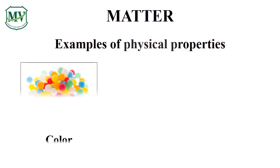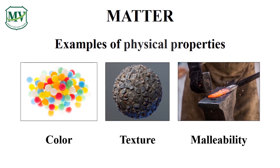Color, texture, and malleability are examples of physical properties of matter. For example, iron is malleable — it means that iron can be hammered into a thin sheet or wire. The deformation retains its chemical properties since the identity of the substance was not altered.